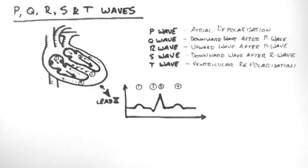This first wave was associated with atrial depolarisation. Therefore, it's a P wave. This next wave is a downward wave after a P wave. Therefore, it's a Q wave.